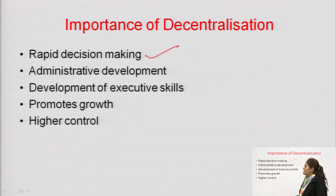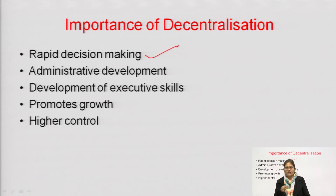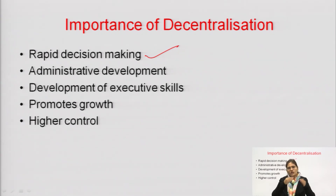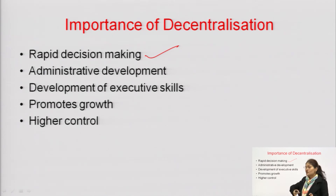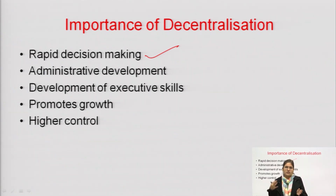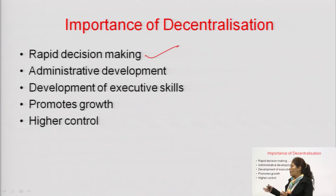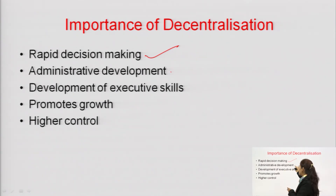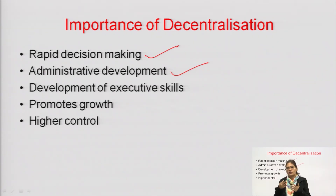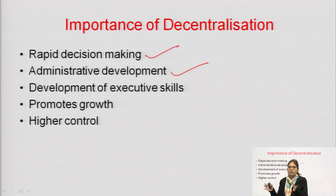Next is administrative development. In decentralization, the top higher authority allocates or delegates work to the heads of departments. The heads of departments also gain administrative skills — they get the opportunity to learn how to manage the whole organization or their portion of it. So obviously, if there is decentralization of authority, administrative development is promoted. Things will be managed properly and the heads of departments will develop executive skills by managing the whole department properly.